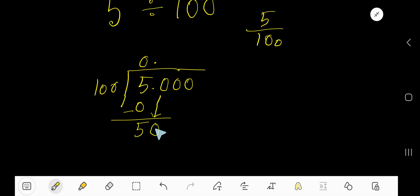So, bring down this 0. So, we are getting 50. Again, 50 is less than 100. So, 100 goes into 50 0 times.